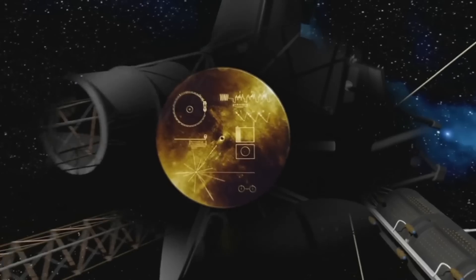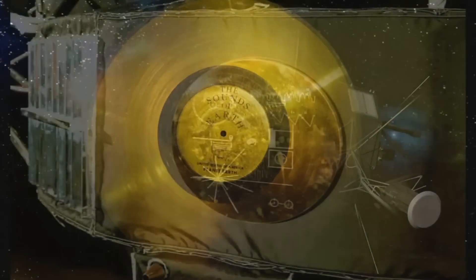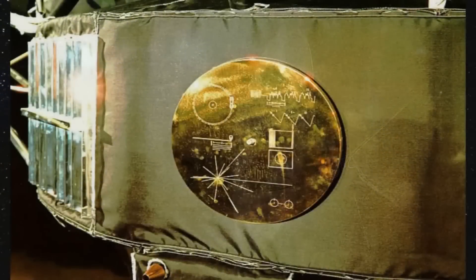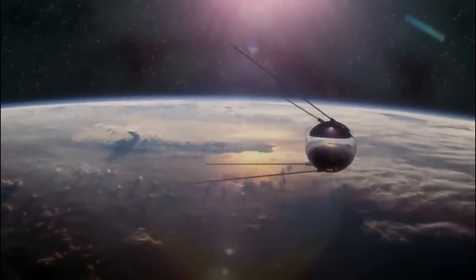The gold coating on the records acts as a cosmic message in a bottle, as its resistance to corrosion in space will allow the information they contain to remain intact for more than a billion years.